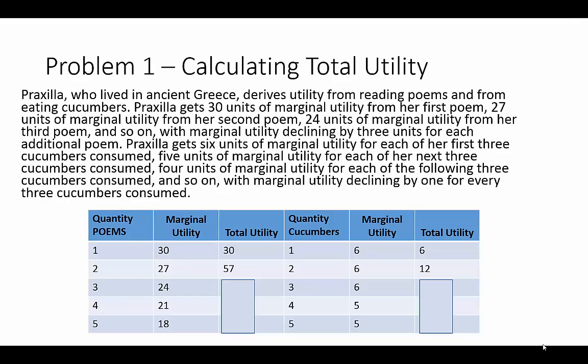As we see here, when one poem is consumed — moving from zero to one — that first poem gives us a marginal utility of 30, which gives us a total utility of 30, since that's the only one we're consuming. Same thing with cucumbers: as we consume one cucumber, we receive 6 units of marginal utility, with a total utility of 6.